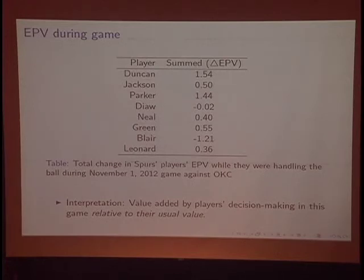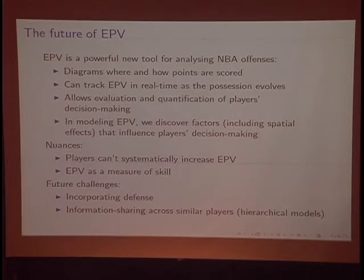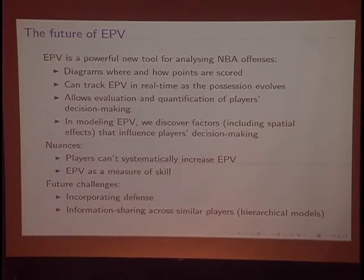We can sum the changes in expected possession value for specific players during a game and over the course of a season to see which players tend to make decisions that increase expected possession value. Moving forward, I think this provides powerful ways to understand and quantify NBA offenses — where value comes from, who contributes it, and how. It allows us to disentangle skill from decision-making, since players who may not be great shooters or runners can still have high EPV contributions through good decisions. Future work includes incorporating more defensive information — right now we have positions of defenders but not who they are. If you're being guarded by Boris Diaw versus Nando DiColo, your expected possession value might be very different.